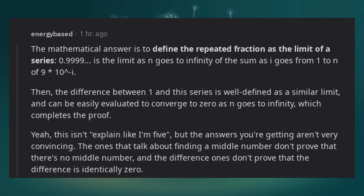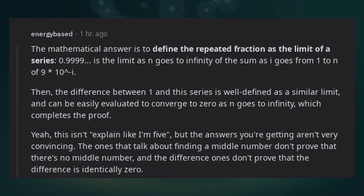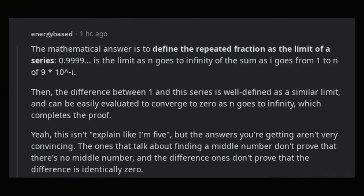Yeah, this isn't explain like I'm 5, but the answers you're getting aren't very convincing. The ones that talk about finding a middle number don't prove that there's no middle number, and the difference ones don't prove that the difference is identically 0.